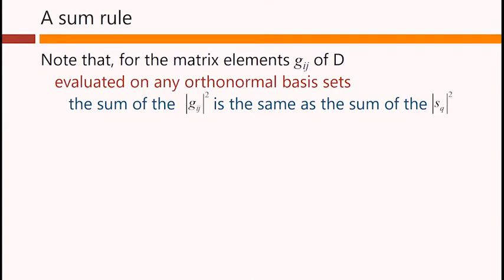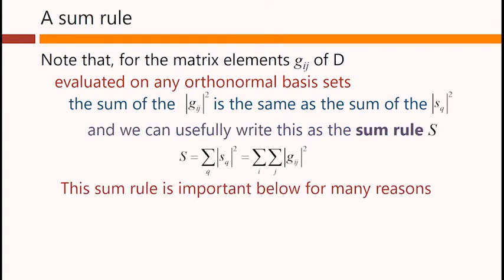the sum of the modulus squared of these matrix elements is the same as the sum of the modulus squared of the singular values. And we can usefully write this as a sum rule S.